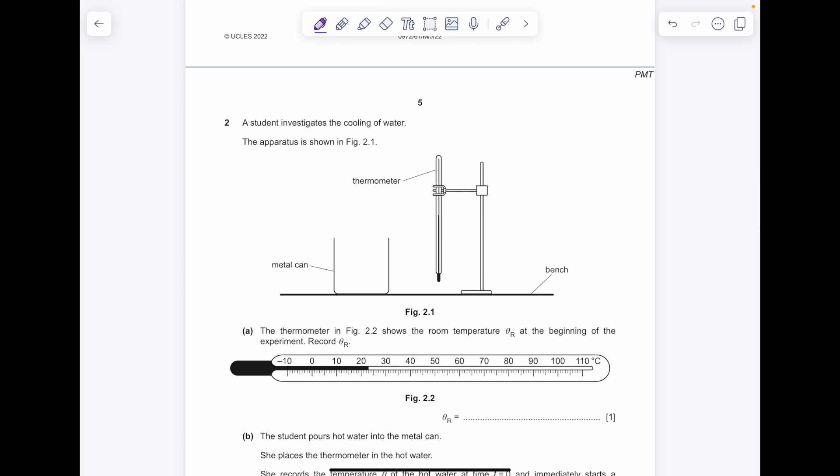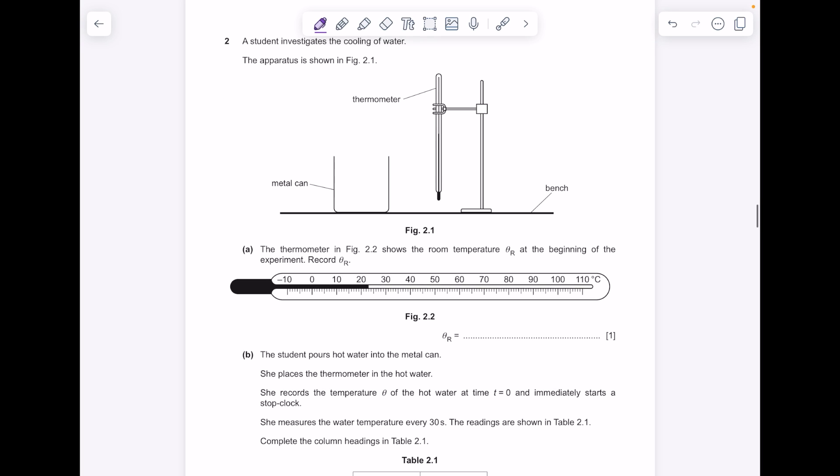The student investigates the cooling of water. The apparatus is shown in figure 2.1. The thermometer in figure 2.2 shows the room temperature at the beginning of the experiment. Record theta R. Read that nice and carefully for me, it's 23 degrees Celsius.